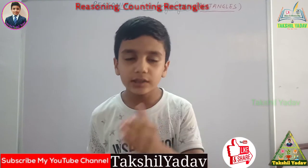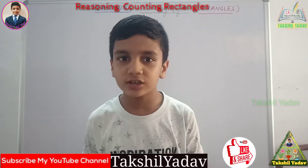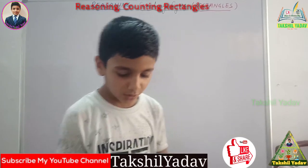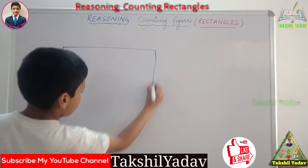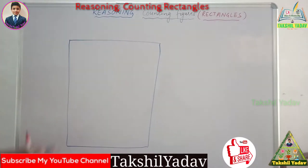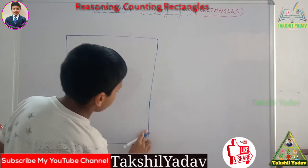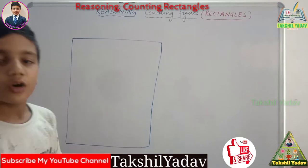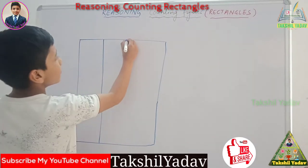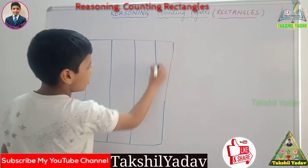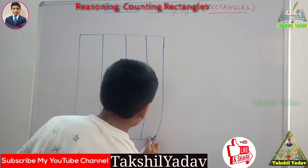The first type is figures which have equal columns and rows. I am drawing a figure here — a big rectangle. Now I will draw the columns. Columns go from up to down. So first I have one column, two columns, three columns, and the fourth column. I have four columns now.